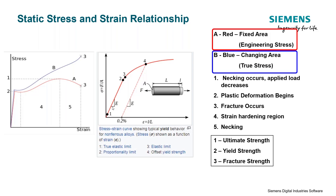It is often difficult to tell exactly where plastic deformation occurs — that is, the exact yield strength where we enter the plastic region. A common convention for determining the yield strength of a material is the 0.2% strain offset method. We load the material, measure the stress and strain, then unload it and expect it to return to its original shape. When we observe 0.2% strain remaining in the material after unloading, we say that we have entered the plastic region.